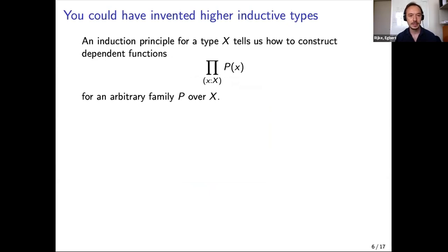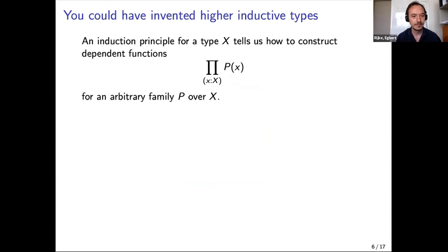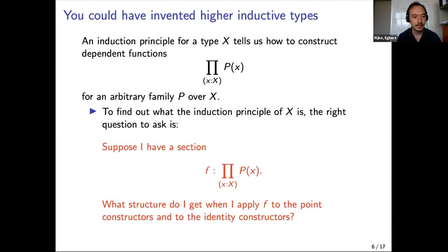We have to figure out what the induction principle for the circle is. An induction principle tells you how to construct a dependent function out of the inductive type. If you have a family P over your higher inductive type, you want to construct a dependent function: for every x, give an element of P of x. To do this, consider what structure you get by applying a dependent function to the point constructors and path constructors.